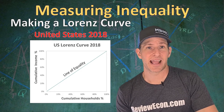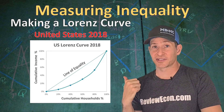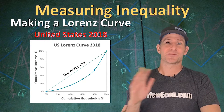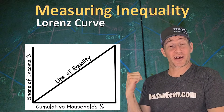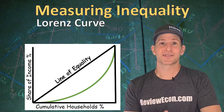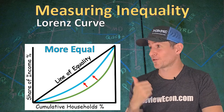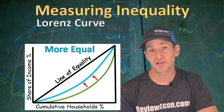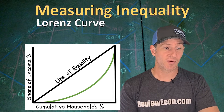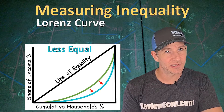If we graph out the data from that table, here is the Lorenz curve for the United States in 2018. Like most graphs in this class, the Lorenz curve can be drawn without any numbers. As the Lorenz curve moves inward toward the line of equality, the income distribution becomes more equal. As it moves away from that line of equality, the income distribution is less equal.